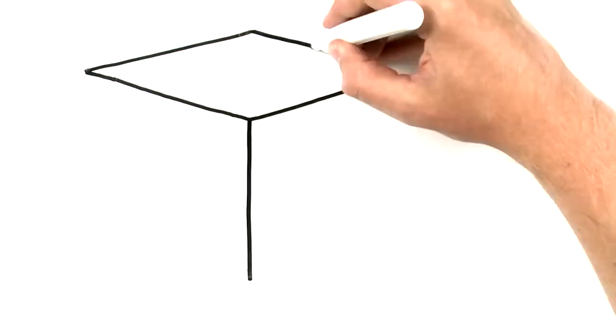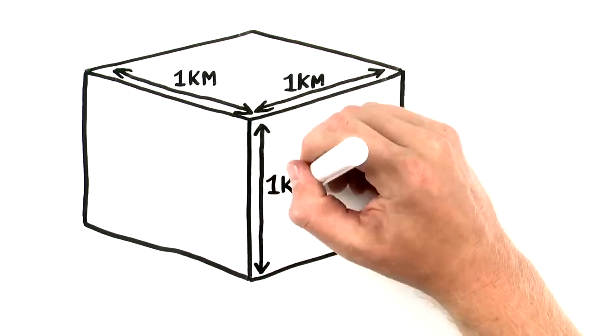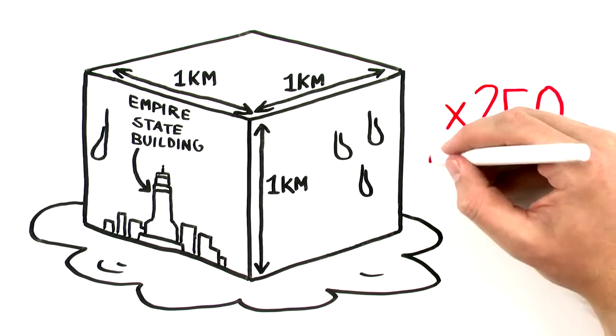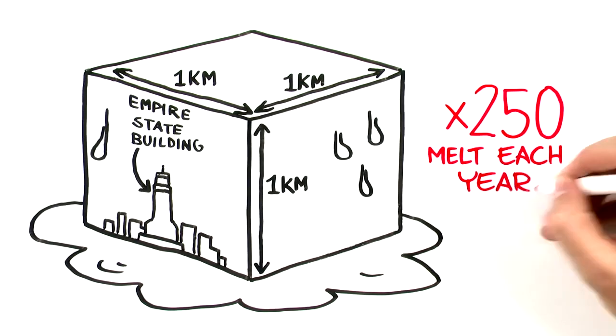What's a gigaton? It's a billion tons, which is approximately a block of ice one kilometer square. And 250 of these giant Greenland ice blocks melt every year.